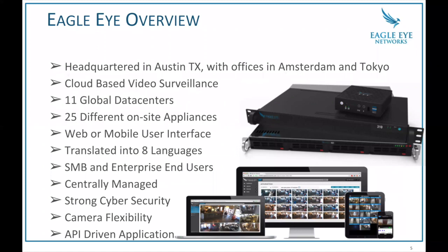I want to cover a little bit about Eagle Eye. We've got a lot of folks on the call, some I recognize and some I don't. We're headquartered in Austin, Texas, and we also have offices in Amsterdam and Tokyo. We do cloud-based video surveillance globally with 11 different data centers and about 25 different on-site appliance models — bridges or CMVRs. It's all accessed through mobile or the web and we've been translated into about eight languages, so we're truly globalized. We serve both small business and enterprise end users; over the last few years we've really grown into the enterprise space.